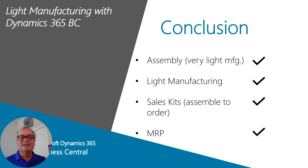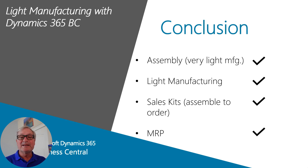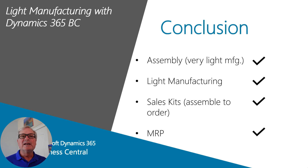We looked at four key ways in which Dynamics 365 Business Central can help light manufacturers: two types of assembly orders, a production order, and how easy the MRP process is to use and execute. What's nice is you can always make this more sophisticated — on production orders you can add routing, different work centers, labor, and different locations with stock keeping units. There's a lot of functionality you can add to a basic setup of assembly and production orders in Business Central, and you can add them as you need them as you learn the system and mature in your manufacturing operations.